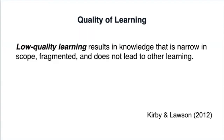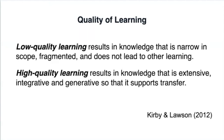They argue that low-quality learning results in knowledge that is narrow in scope, fragmented, and does not lead to other learning. Whereas high-quality learning results in knowledge that is extensive, integrative, and generative, so that it supports transfer. With this frame in mind, we begin with automaticity.